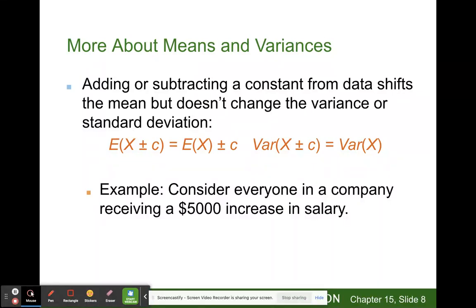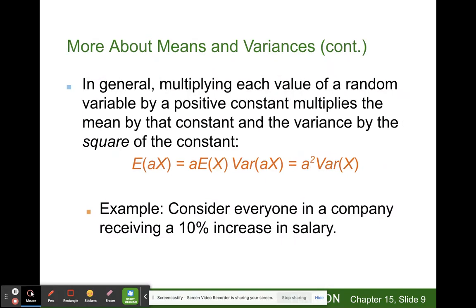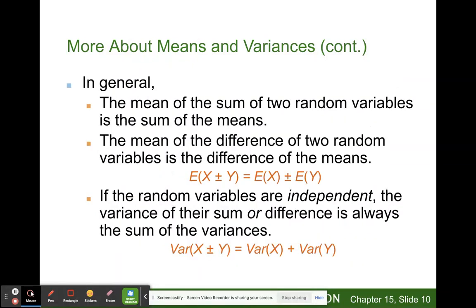When we add a constant to the mean, it'll shift the mean up or down, but when we add a constant to the variance it doesn't change the variance. Consider everybody in the company receiving a $5,000 increase in salary. In general, multiplying each value of a random variable by a positive constant multiplies the mean by that constant and the variance by the square of the constant. Consider everyone in the company getting a 10% increase.